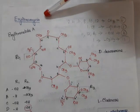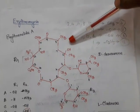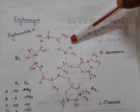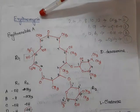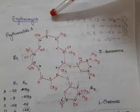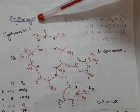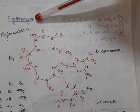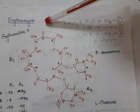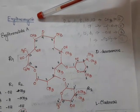Students, last class we have seen the chemistry and mechanism of action of macrolides. This class we will see the clinically used macrolides: erythromycin, clarithromycin, and azithromycin. We will see them one by one. First we will see erythromycin.